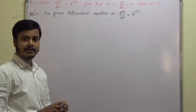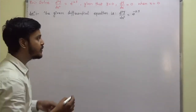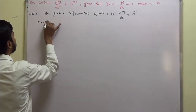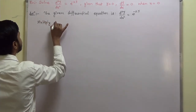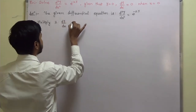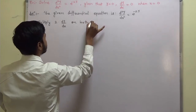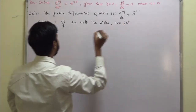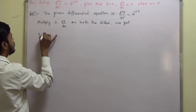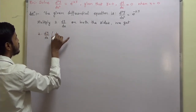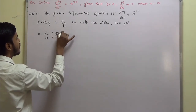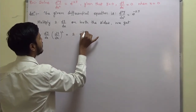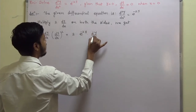The second step says: multiply throughout, on both sides, by 2·(dy/dx). Multiplying 2·(dy/dx) on both sides, we get 2·(dy/dx)² = 2·e^(-2y)·(dy/dx). Simple.